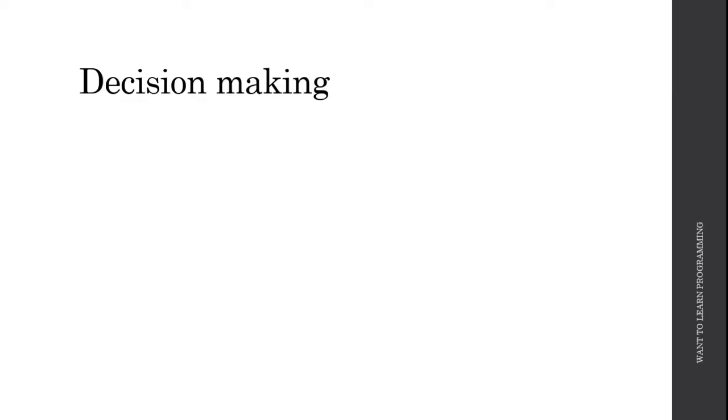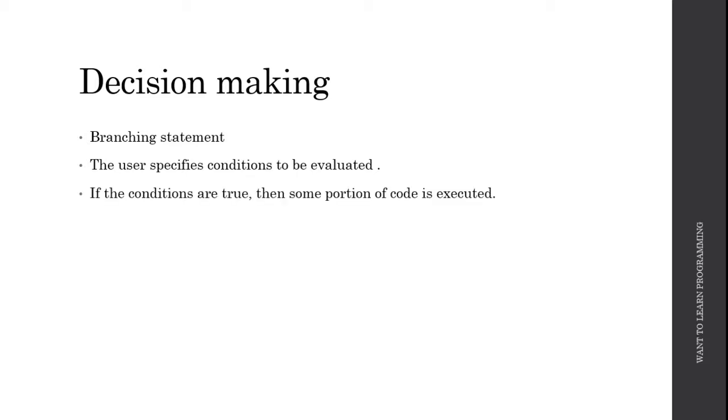Decision making statements are also called branching statements. The user specifies conditions to be evaluated, and if the conditions are true then some part of the code is executed. If the conditions are not true then some other part of code will be executed, the previous part will be skipped, or it will continue from the next statement. We will look into detail of decision making statements in the next 2-3 videos.